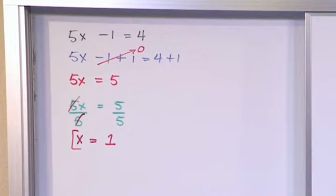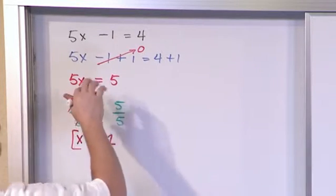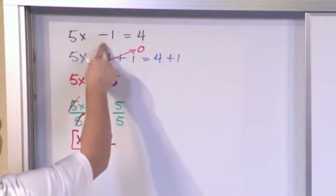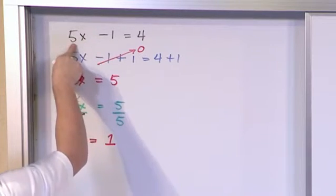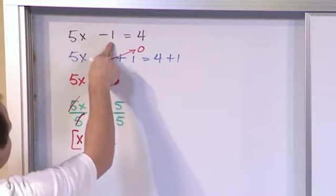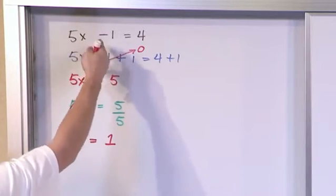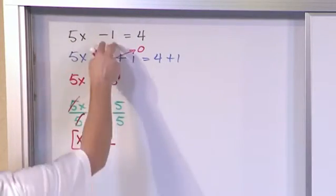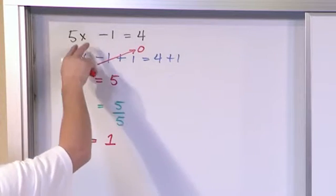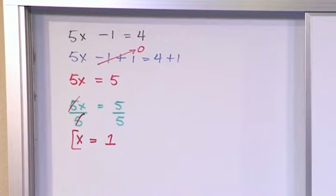Basically, we're doing it in the reverse order of how we would calculate this to begin with. Notice we have multiplication and then we have addition. Multiplication always comes first before addition or subtraction. So when we isolate x, we have to kind of go backwards from that. We need to get rid of the addition and subtraction first and then we get rid of the multiplication or the division.